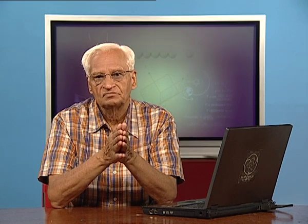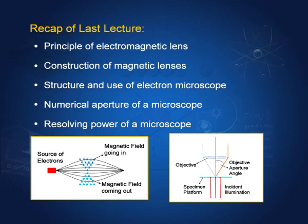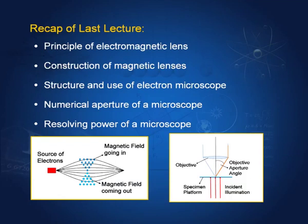This electron microscope has what are known as electromagnetic lenses. We also learnt the principle of a magnetic lens. We have a varying magnetic field and a source of electrons. When these electrons go through the magnetic field, they get focused at a point. And with the help of electromagnetic lenses, we could construct an electron microscope. Then we had to talk of the resolving power of a microscope.